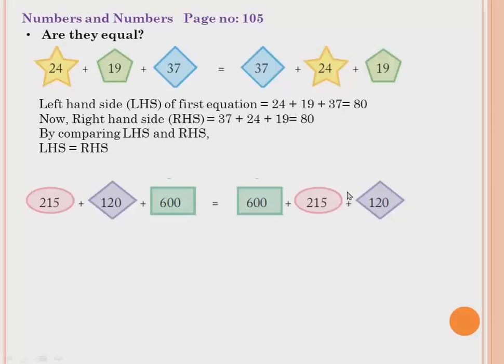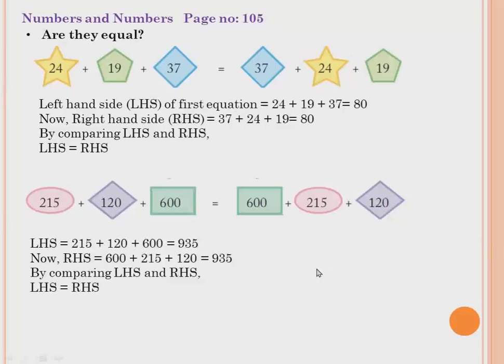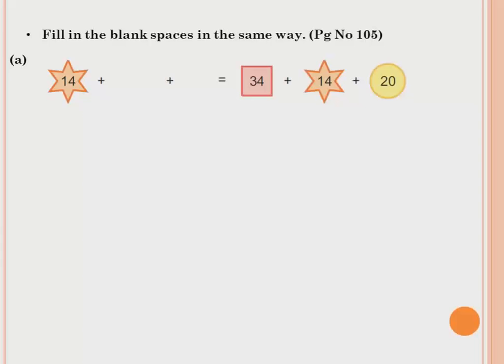No extra number has been added on either side. Here 215 is there, 215 is there; 120 and 120; 600 and 600. So if you see the same numbers equally placed on both sides, we can say they are equal. The method: take LHS — 215 plus 120 plus 600 equals 935. Take RHS — 600 plus 215 plus 120 equals 935. By comparing, LHS equals RHS, so both sides are equal.